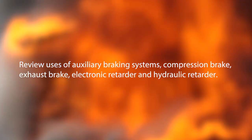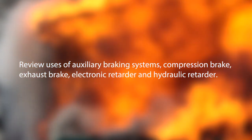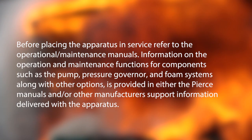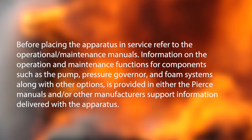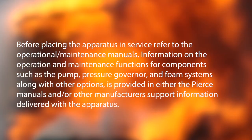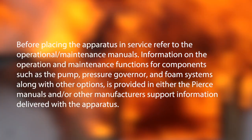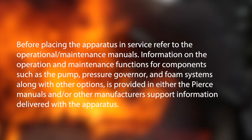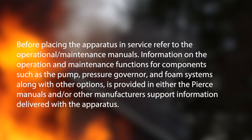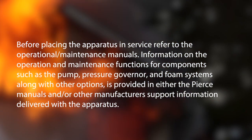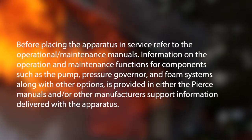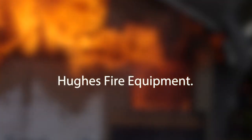Review the use of auxiliary braking systems: compression brake, exhaust brake, electronic retarder, and hydraulic retarder. Before placing the apparatus in service, refer to the operational maintenance manuals. Information on the operation and maintenance functions for components such as the pump, pressure governor, and foam systems, along with other options, is provided in either the Pierce manuals or other manufacturer support information delivered with the apparatus. If you need more information, please contact Hughes Fire Equipment.